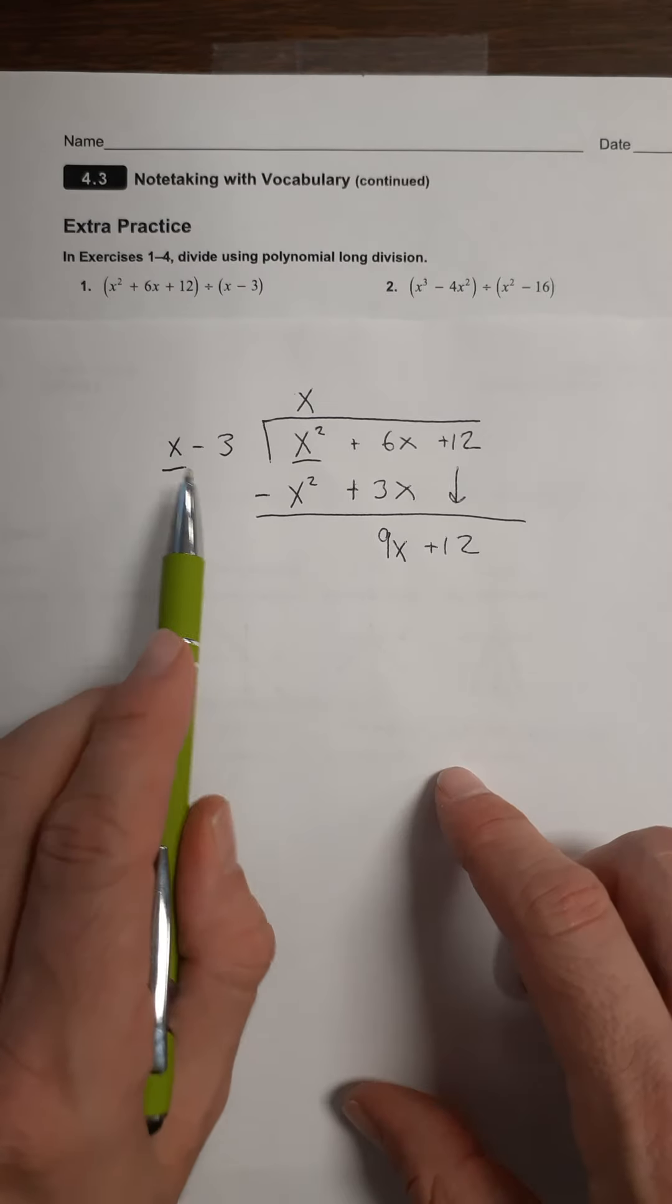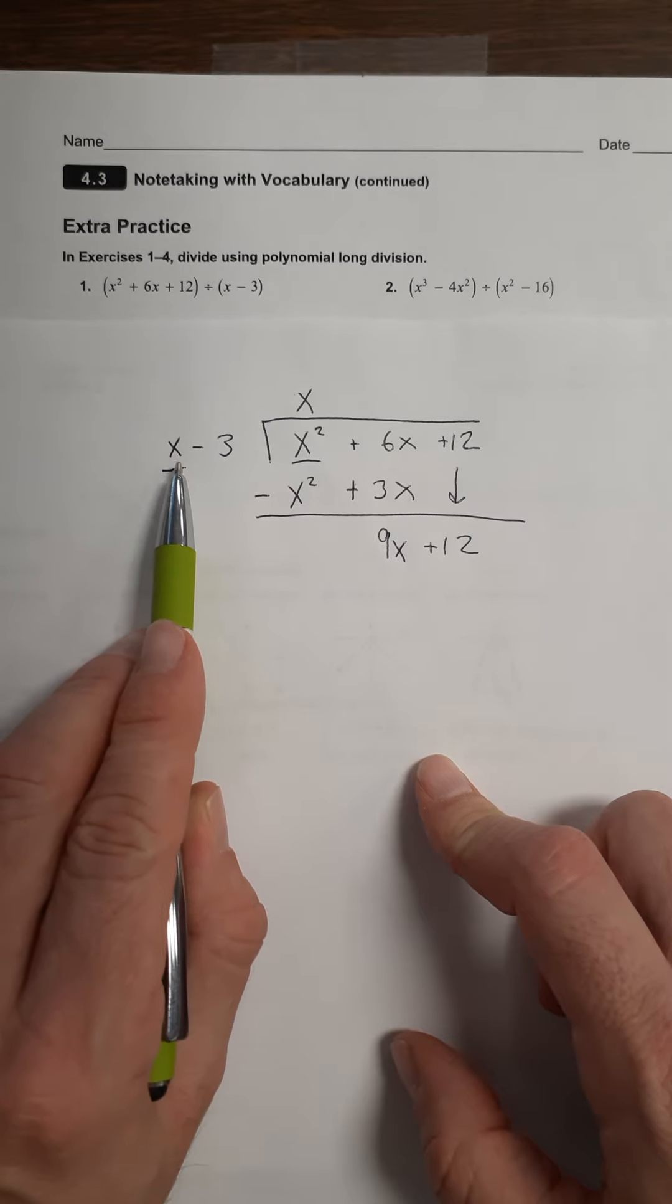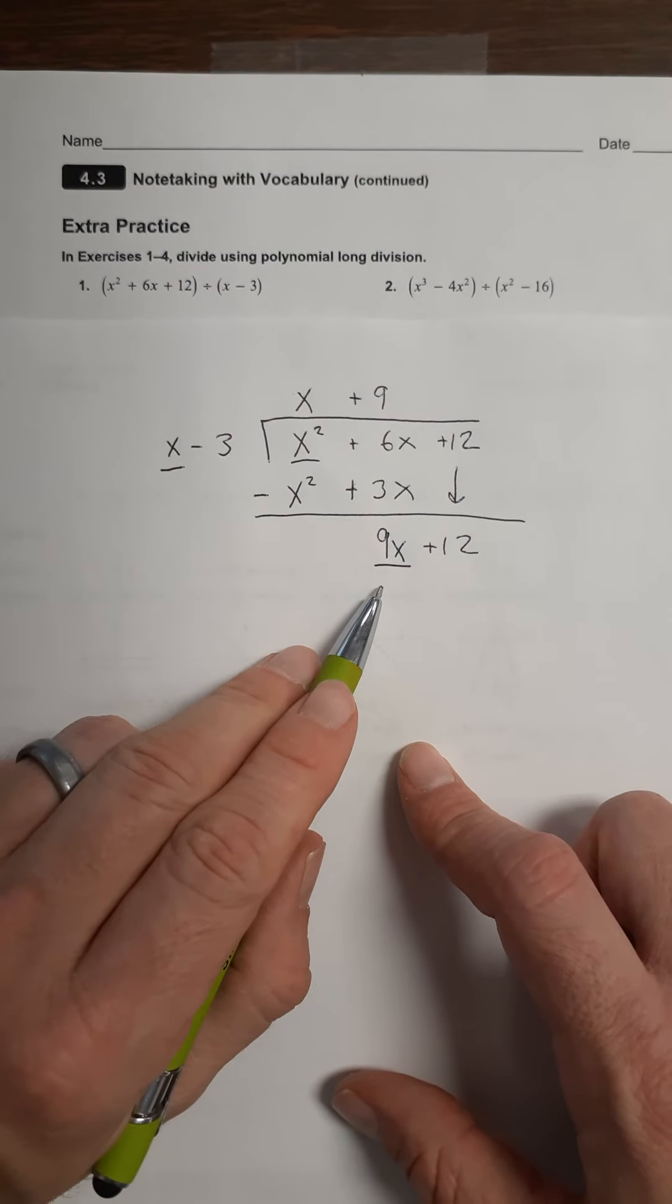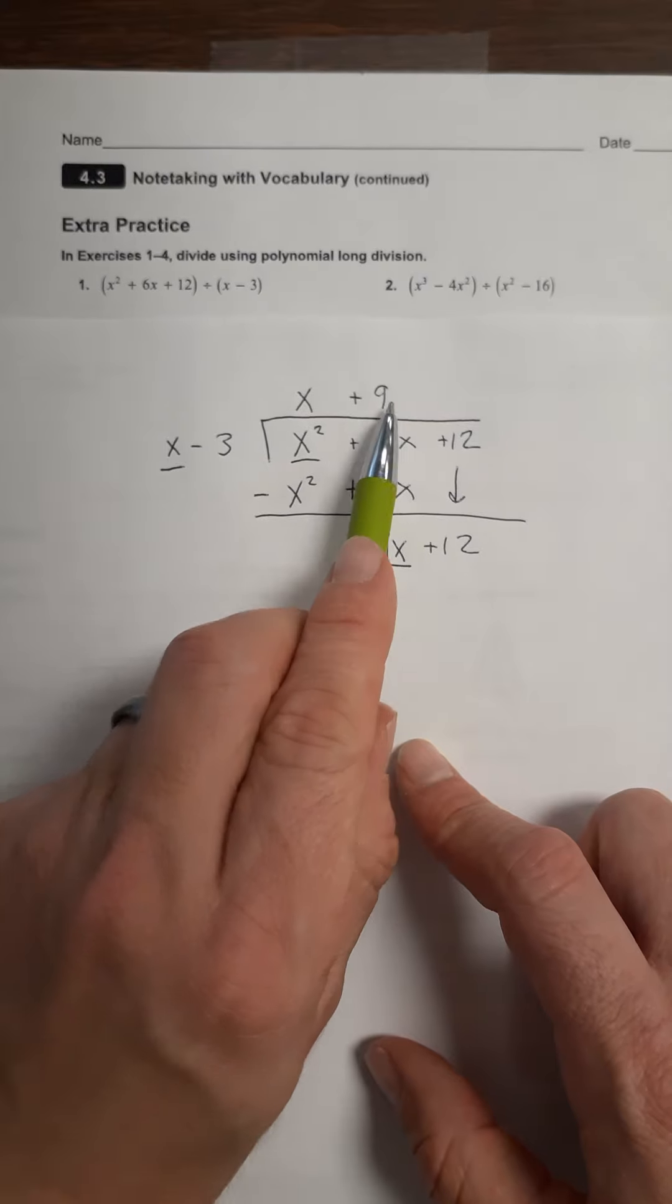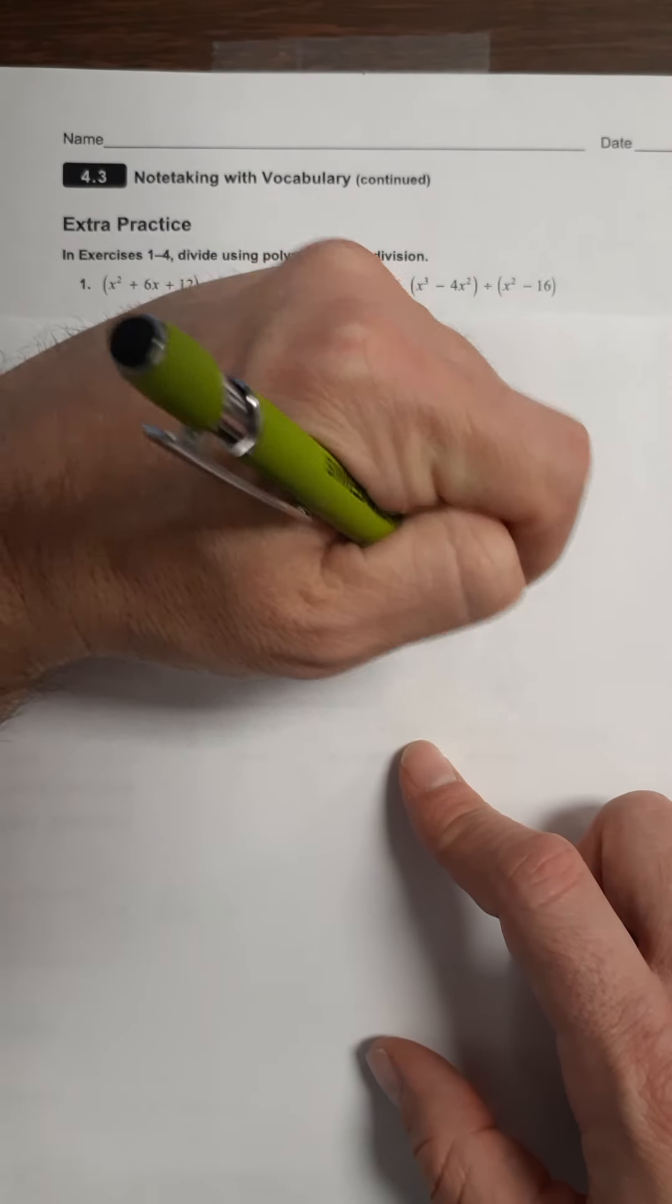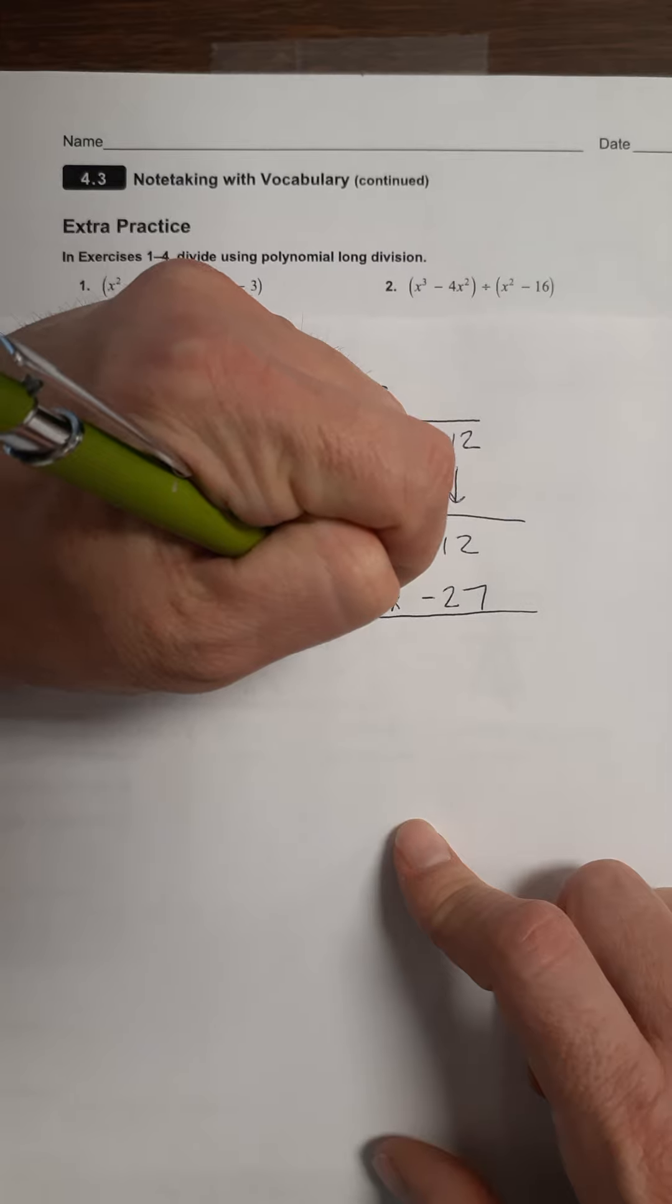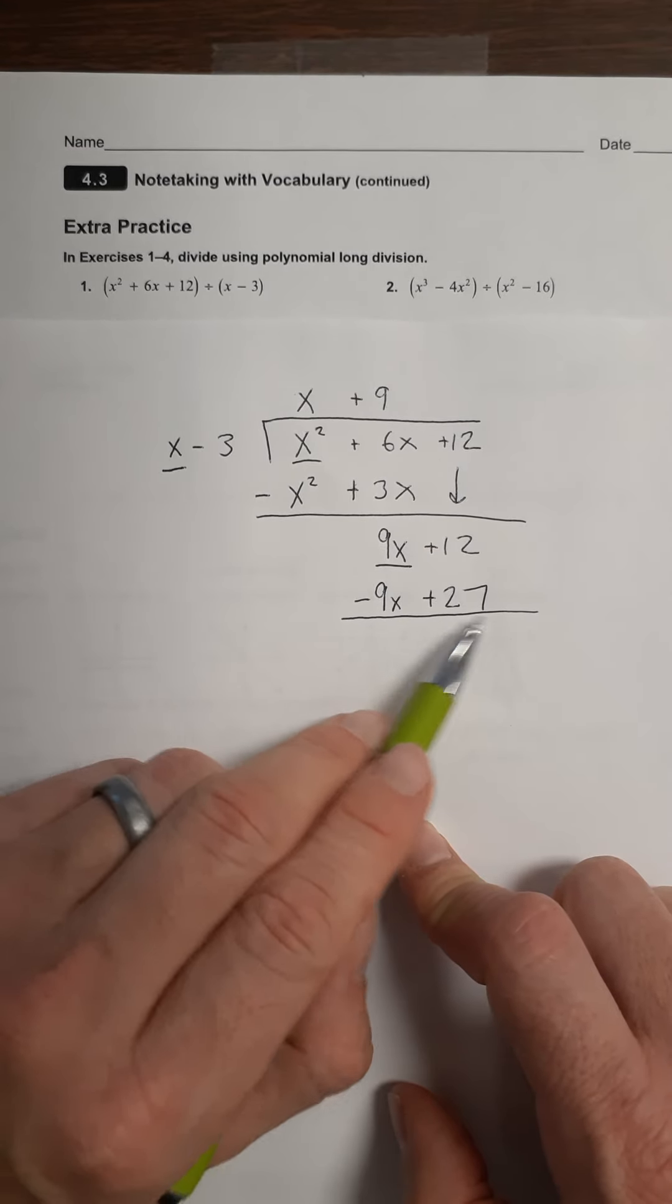So now we're going to repeat those steps, except instead of asking ourselves, what do I have to multiply this by to turn it into this? I ask myself, what would I have to multiply x by to turn it into 9x? The answer is 9. So plus 9. 9 times x is 9x. So plus 9 would go right there. And now we're going to take this 9 and multiply it by both of those. So 9x minus 27. Just like we did with regular long division back in elementary school, we would put a minus here, except that means this whole thing has to have its sign changed. So this is going to become a minus, this will become a plus. 9x minus 9x, they cancel out. 12 plus 27 is 39.